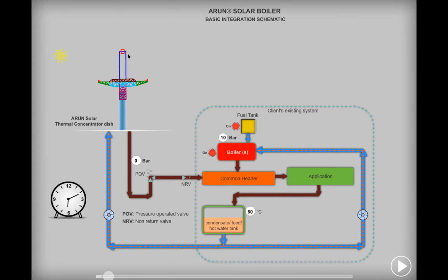The steam generating system consists of the Arun dish system, pumps, valves, etc. Once the system starts generating steam, the pressure in the line starts increasing. Once this pressure matches the pressure in the existing boiler header, a valve will open and steam will be delivered to the common header. This process will continue whenever the Sun is available.